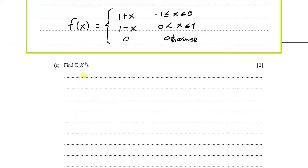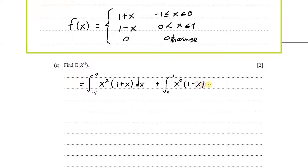Let's go on to part C. The question says: find E of x squared, which is the expectation. For the expectation, we will need to use the probability density function we obtained. That's going to be the integral from minus 1 to 0 of x squared times (1 plus x) dx, plus the integral from 0 to 1 of x squared times (1 minus x) dx.